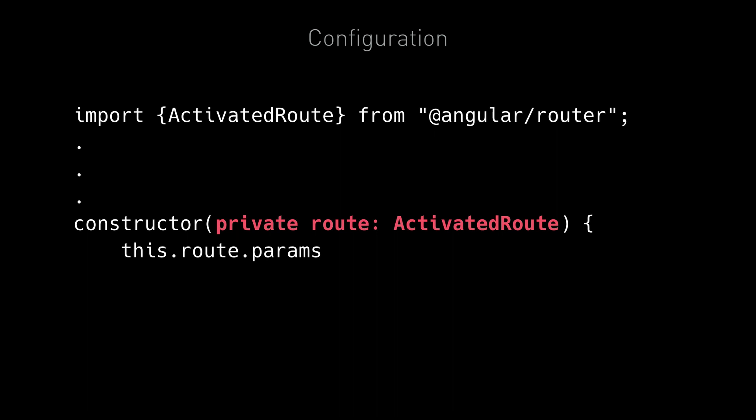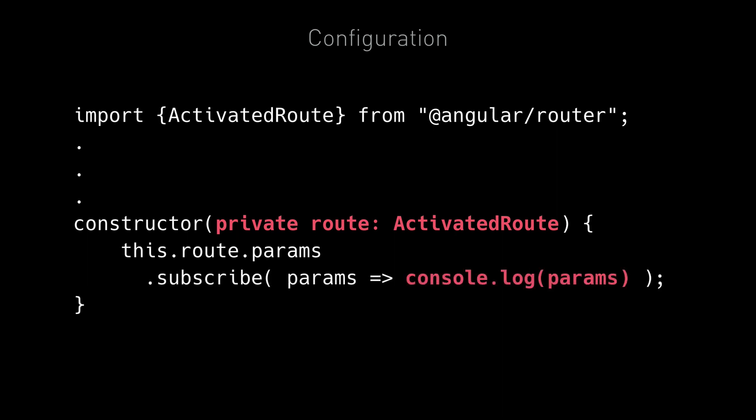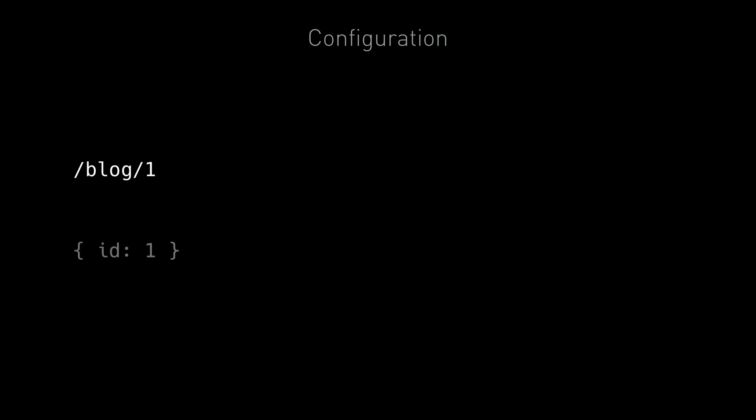We first import it and then inject it into the constructor of our blog component. It then exposes an observable through its params property, which we can subscribe to and then be notified with whatever parameters are in the route. So now if we navigated to slash blog slash one, the number one would get emitted on the observable and printed to the console.